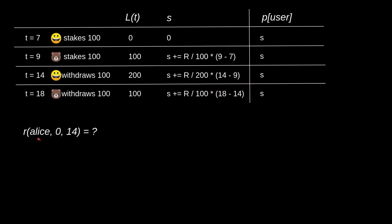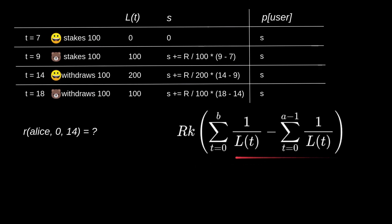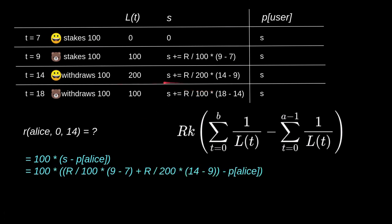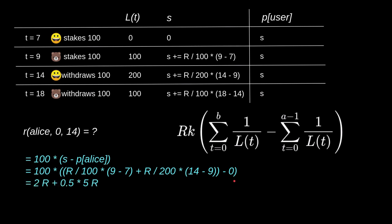Now let's calculate the rewards. For Alice withdrawing at t equals 14, she has 100 tokens staked. Her reward uses the equation: 100 times (s at t equals 14 minus p(alice)). The value of `s` at t equals 14 is the summation of r over 100 times (9 minus 7) plus r over 200 times (14 minus 9). Since the last time Alice interacted with the contract her `p(alice)` was 0, this simplifies to 4.5r for Alice.